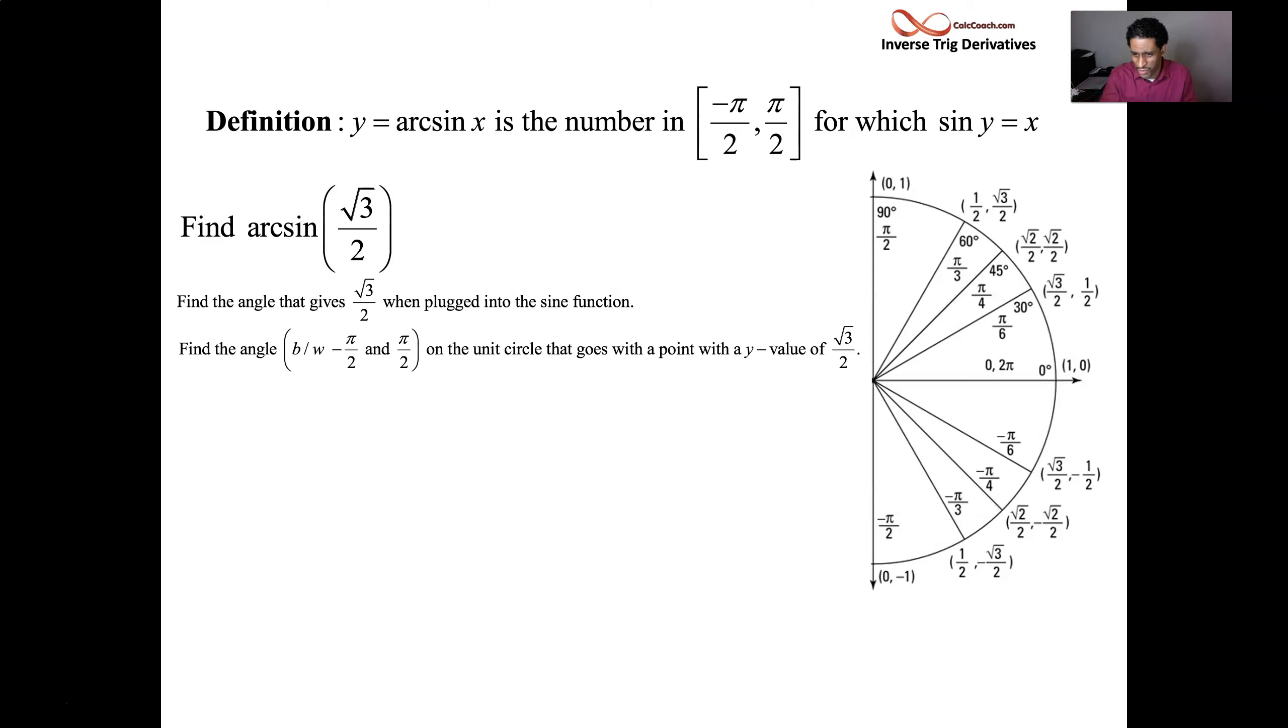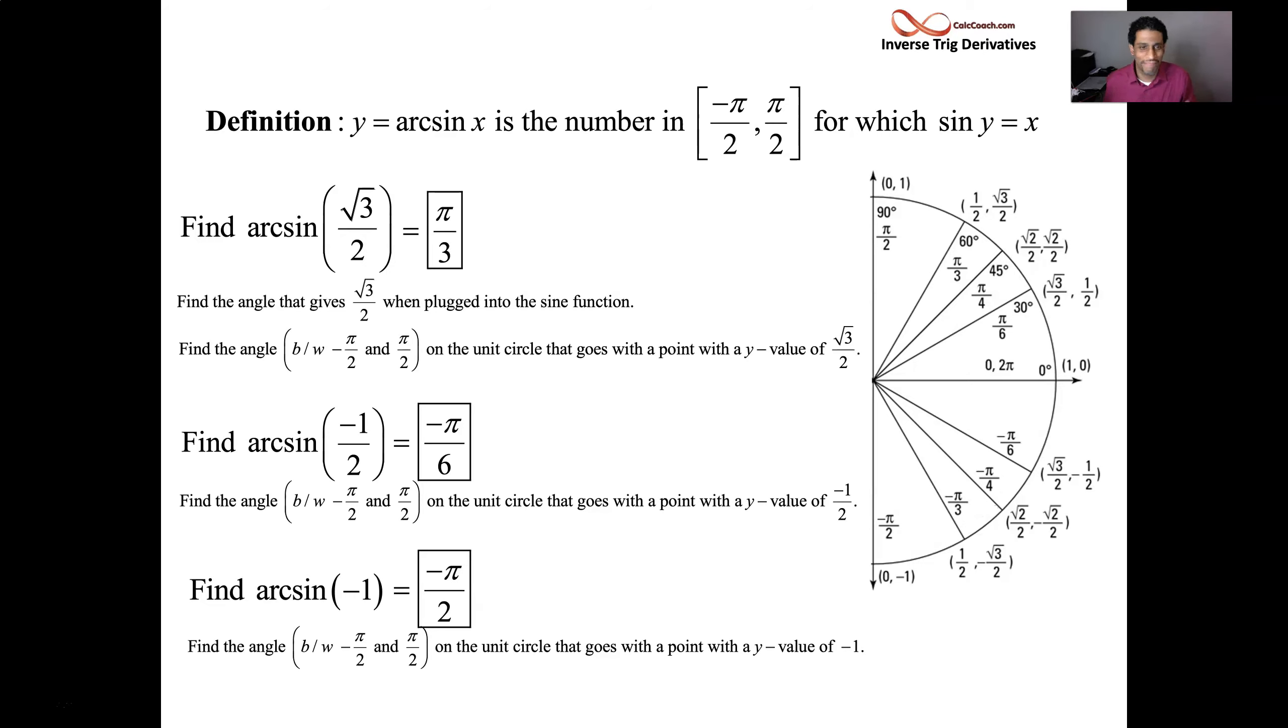But the angle has to be between minus π/2 and π/2. So where's the y value? Positive √3/2. We want the radian version of the angle: π/3. Where's the y value negative 1/2? Negative π/6. Where's the y value negative 1? Negative π/2. So we know how to evaluate arc sine.